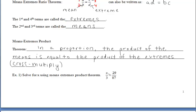In example one, let's solve for x using the means-extremes product theorem. So if we cross-multiply and multiply our means and set that equal to the product of our extremes, we're left with 87x is equal to 87, and we get that x has a value of 1.